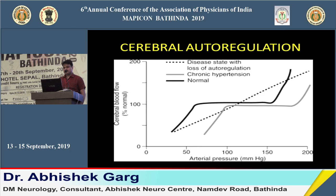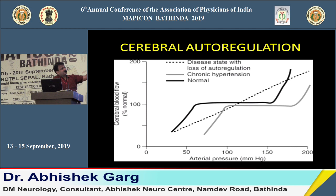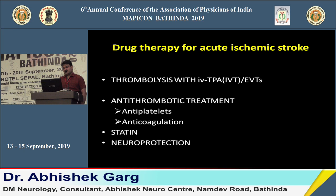The cerebral autoregulation curve shows that between 50 to 150 mmHg arterial pressure, cerebral blood flow remains constant. In stroke, this autoregulation is lost — the curve becomes linear and cerebral blood flow becomes directly dependent on arterial pressure. Reducing arterial pressure will decrease cerebral blood flow, worsening ischemia and making the infarct more severe.